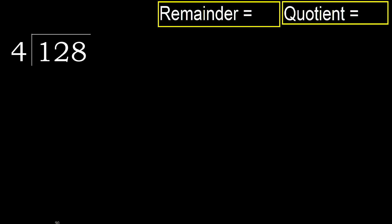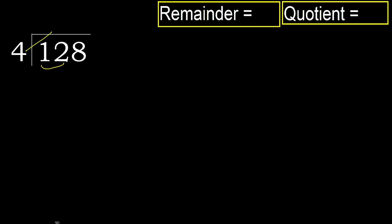128 divided by 4. 1 is less, therefore next. 12 is not less, therefore with 12 — 4 multiplied by which number is nearest to 12 but not greater?